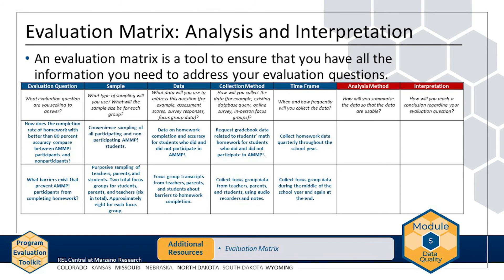The final two columns of the evaluation matrix relate to your plans for data analysis and interpretation of the findings. In Module 3, you identified an evaluation design for each of your evaluation questions. In Module 7, you will use those designs to identify an analysis method. You will fill in the final two columns of the evaluation matrix at that time, so be sure to keep your matrix available.